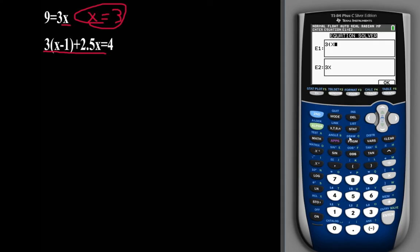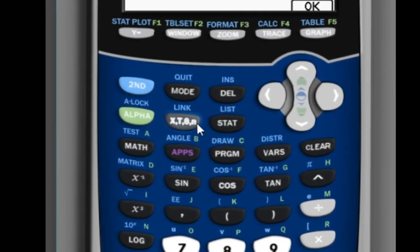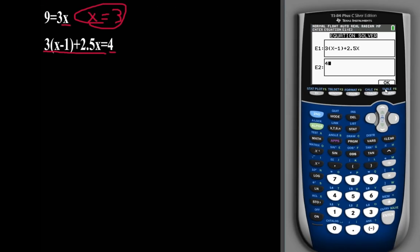So let's just type it in exactly as we see it. Okay. And the other side of the equation is 4. And in case you didn't know, this button right here means x. And then we're going to press OK.